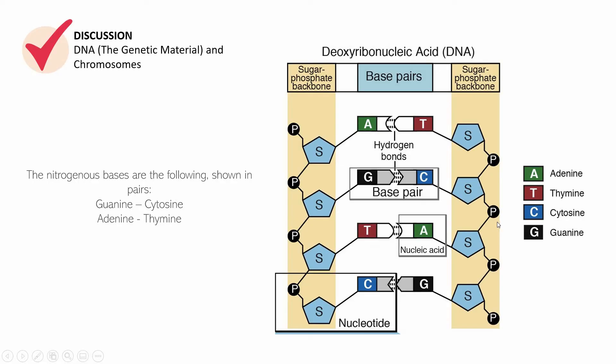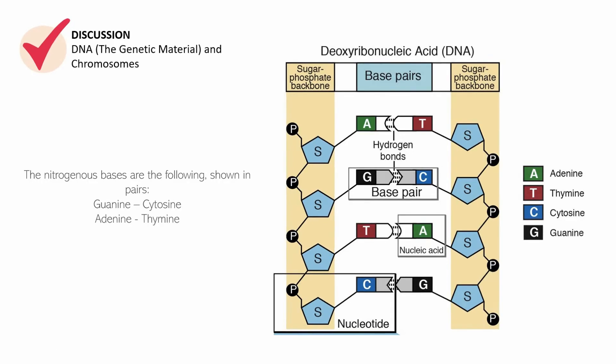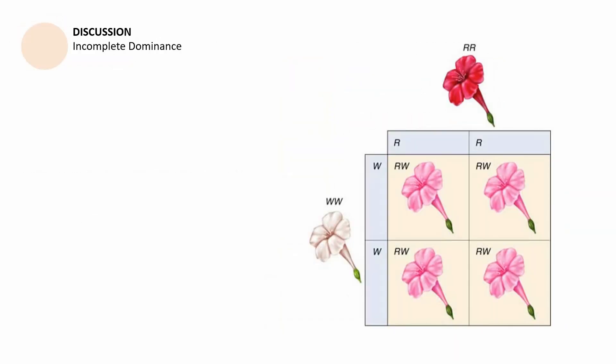That is the ending of the second part of this session, which is a discussion regarding the DNA, the genetic material, and chromosomes. The last part of this session is going to be about a discussion on incomplete dominance. So what you see here is a Punnett square. This shows the alleles.